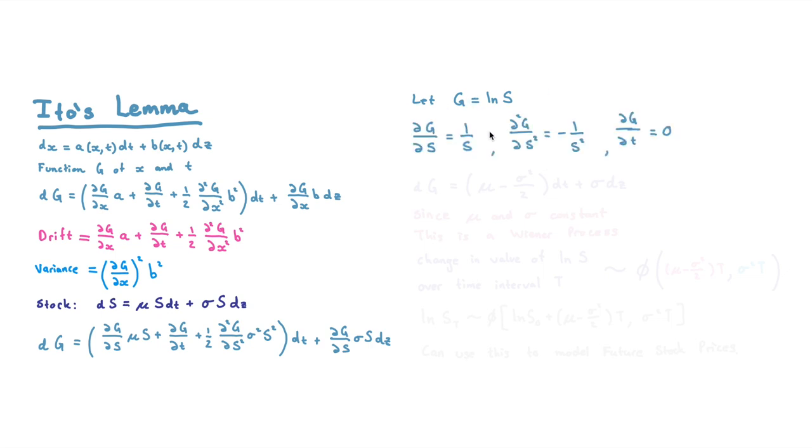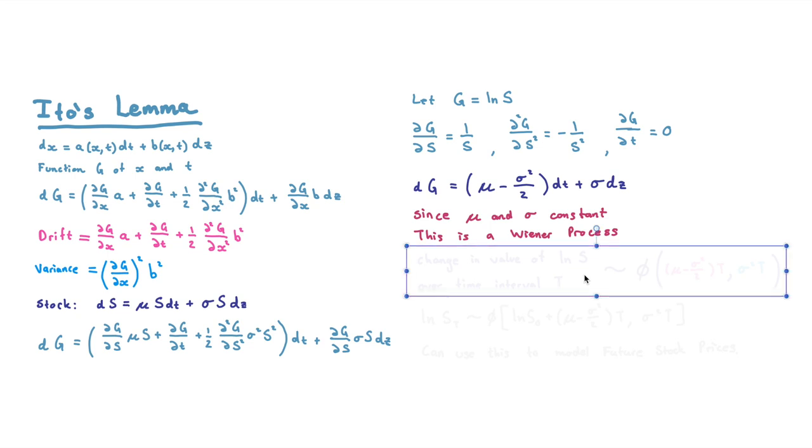And what's lovely about that is look how everything starts to simplify. So these big, ugly terms in this drift part over here become nice and simple when we're using the ln of S. So much so that we get to this very nice and actually manageable thing over here, where what we're seeing is, by using the ln of S, our mu and our sigma have now become constants. They're no longer linked to the stock price, which means we've now reduced it back to a Wiener process.